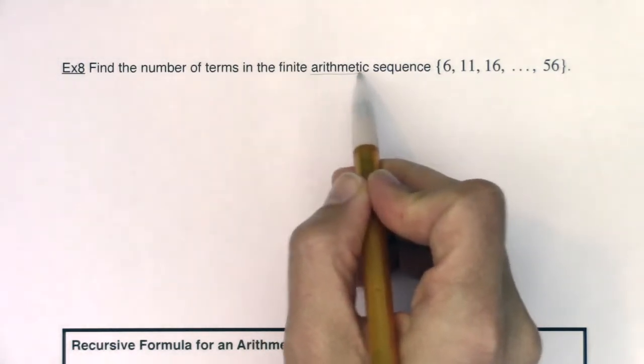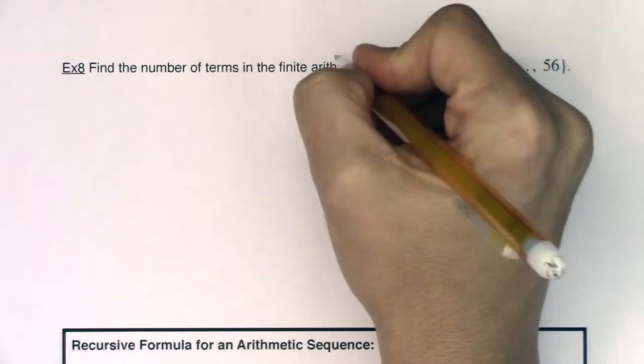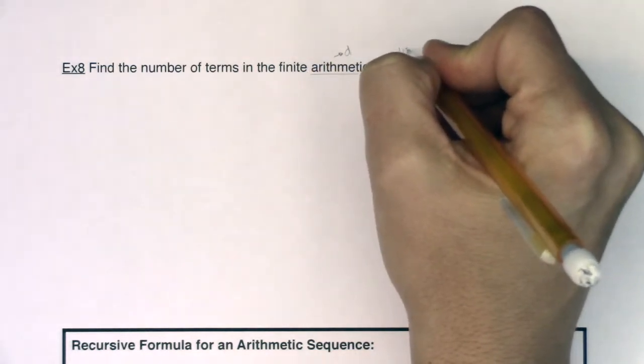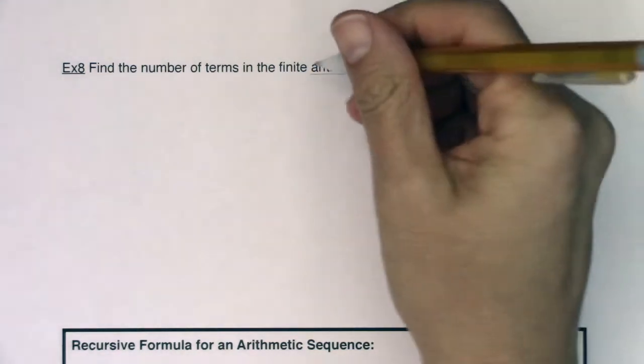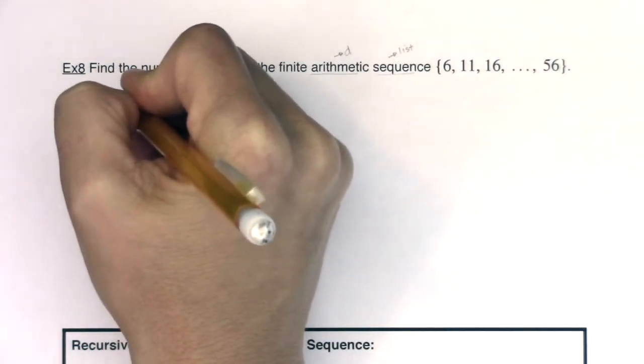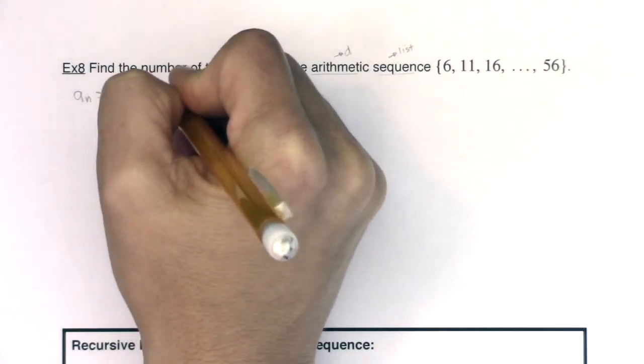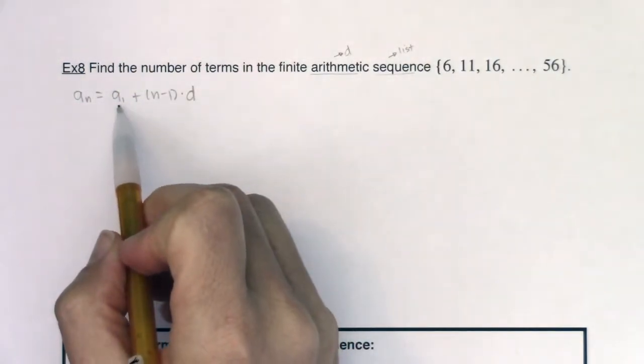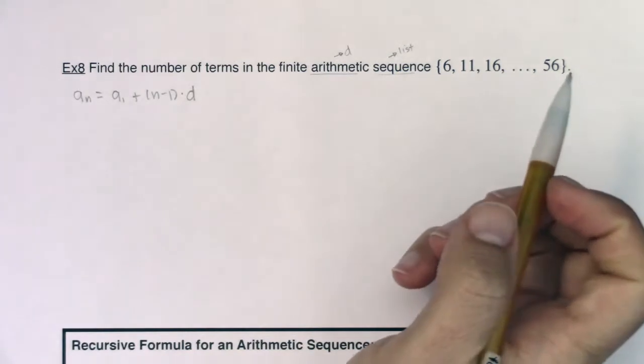But then again I see my buzzwords, right? Arithmetic and sequence. So I think d and I think list. Now if I have an arithmetic sequence I know I get this formula: a sub n equals a sub 1 plus n minus 1 times d. Critical components of this are definitely a sub 1 and d, so let's see if we can spot them.